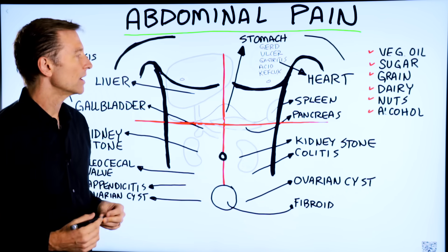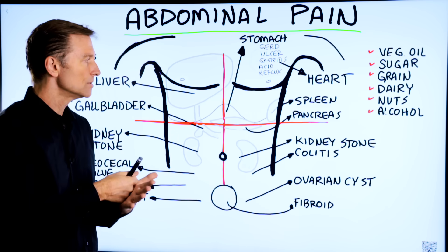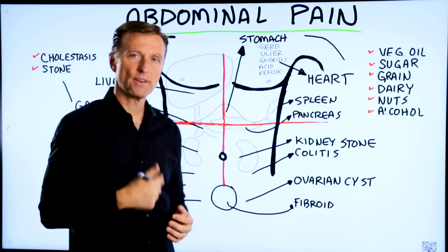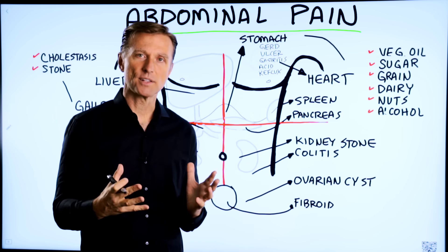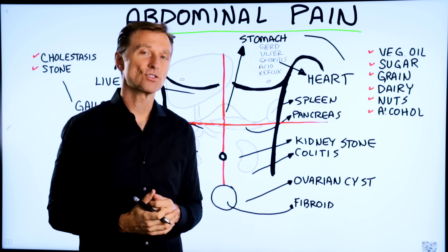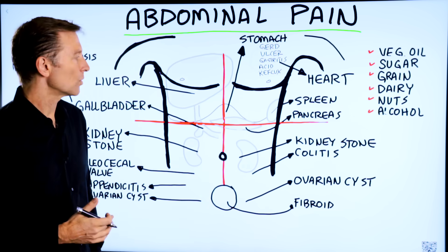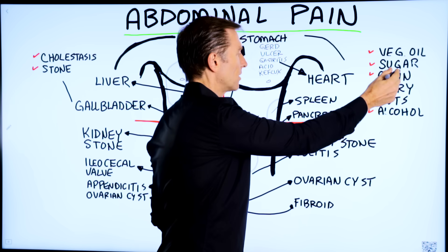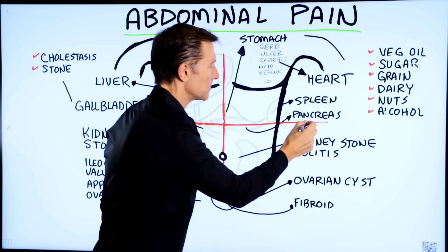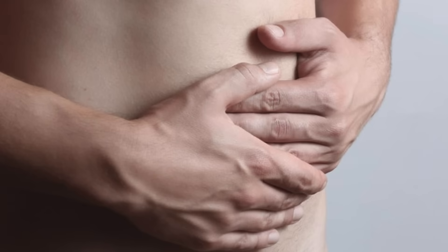Every time you eat food that doesn't have enzymes because it's cooked or processed, your pancreas has to create enzymes to digest that food — it really has to work hard. And the more sugar and refined grains you consume, the more the pancreas has to produce insulin. Pain beneath the left rib cage is usually related to that.